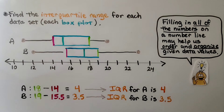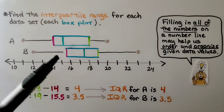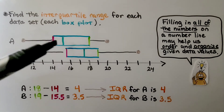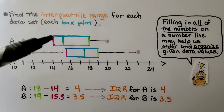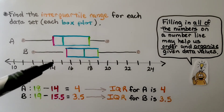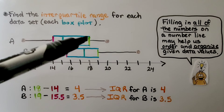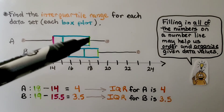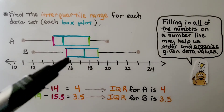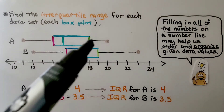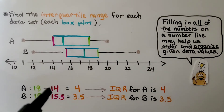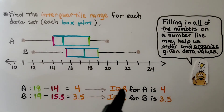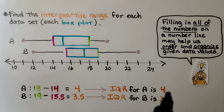We're asked to find the interquartile range for each data set — meaning each box plot. We're not given any numbers, just the box plots. For A, the lower quartile shown in dark pink is 14, and the upper quartile shown in light green is 18. To find the IQR, we subtract: 18 minus 14 equals 4. So the IQR for A is 4.